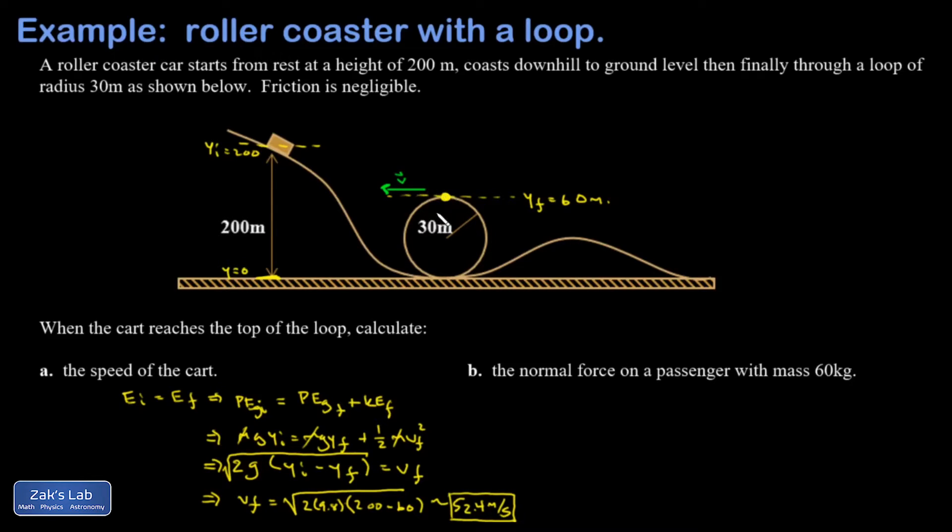So I'm going to do a little bit of force analysis up here. I have a passenger in this cart that has a mass of 60 kilograms, and I have gravity pulling down. It's this little mg. And I also have a normal force. Because they're on the underside of the track, the normal force pushes down.